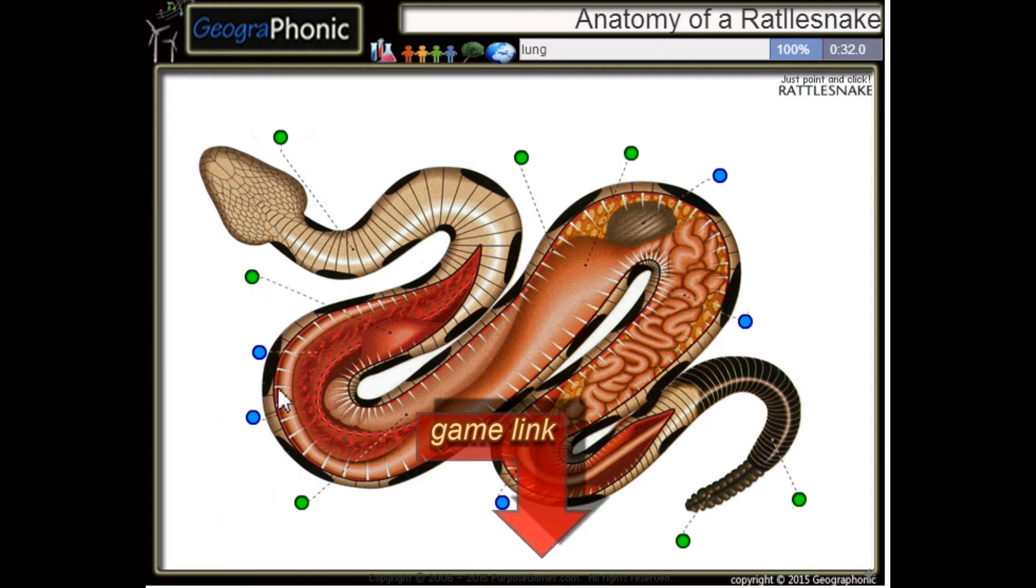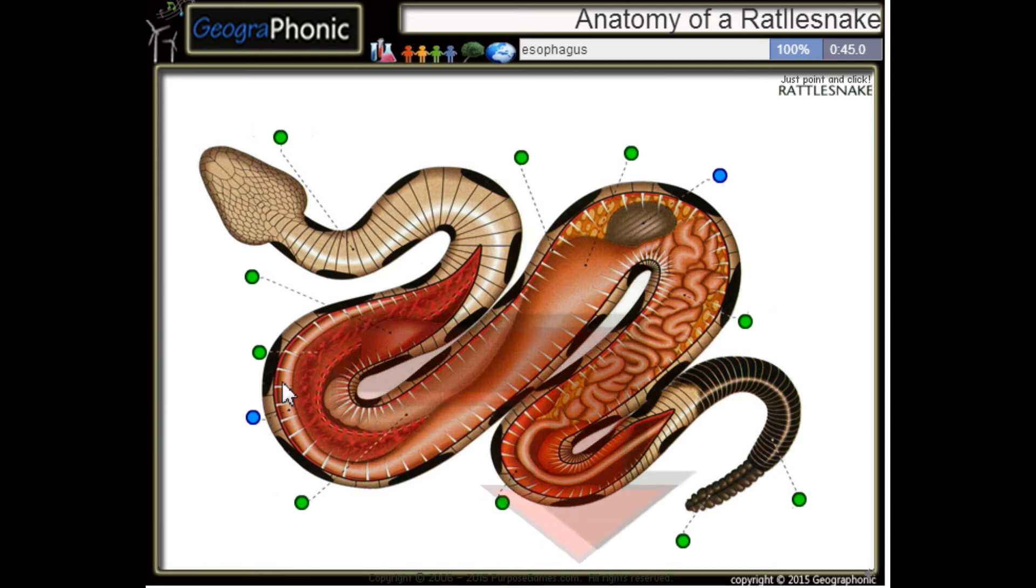This is a lung. This is the intestine. This is the kidney of the snake. This is the esophagus. And this is the gallbladder.